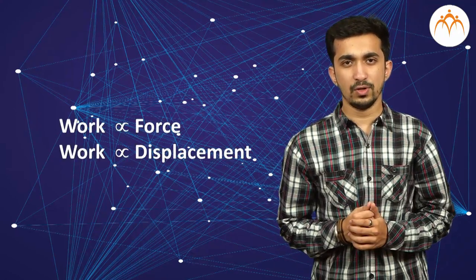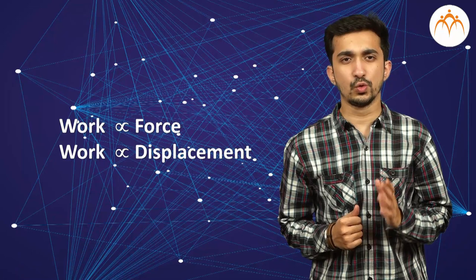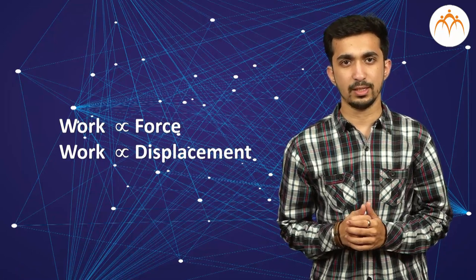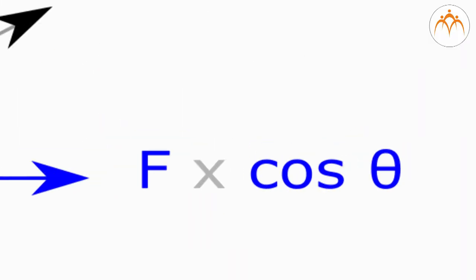Work is done whenever a force results in a displacement. Component of the force parallel to the displacement is what matters. Work is directly proportional to the two factors, force and displacement. Direction is handled with the cosine function.